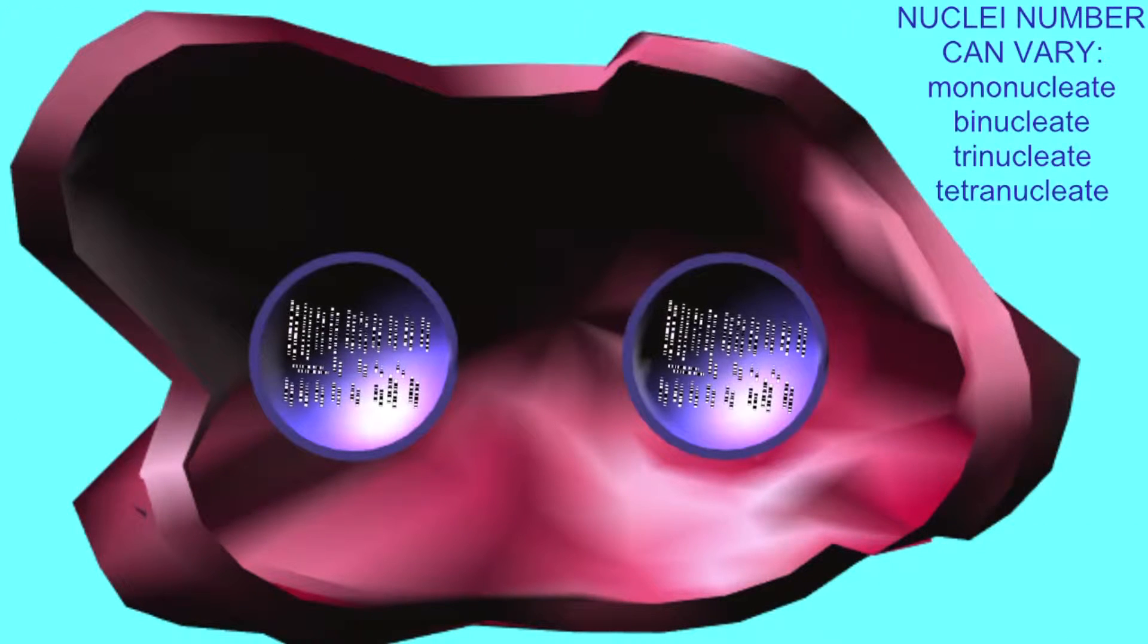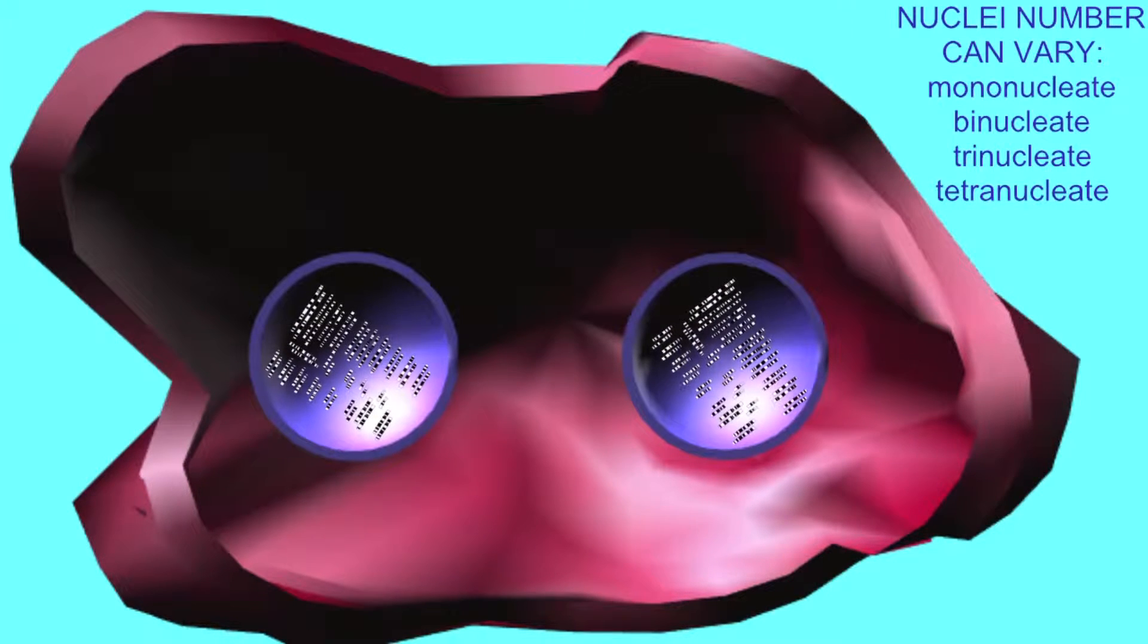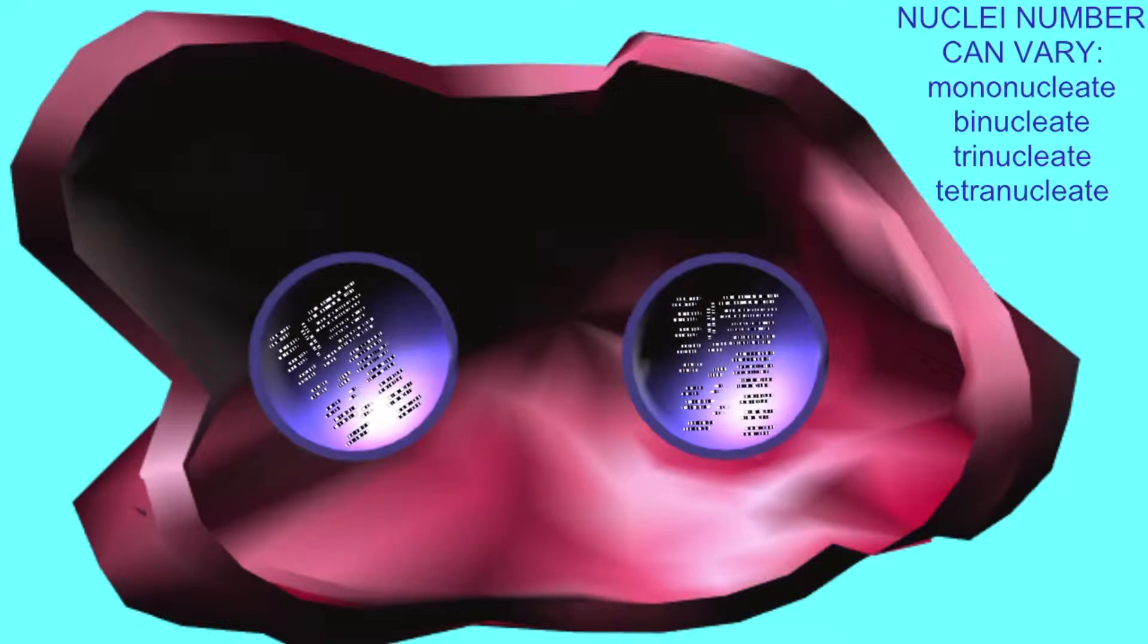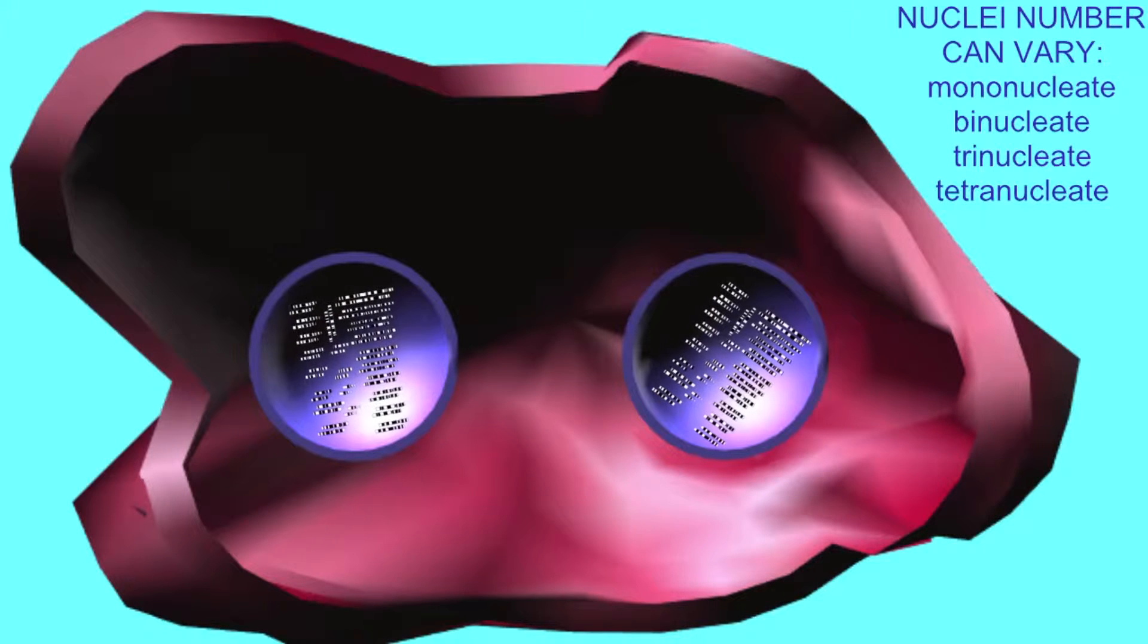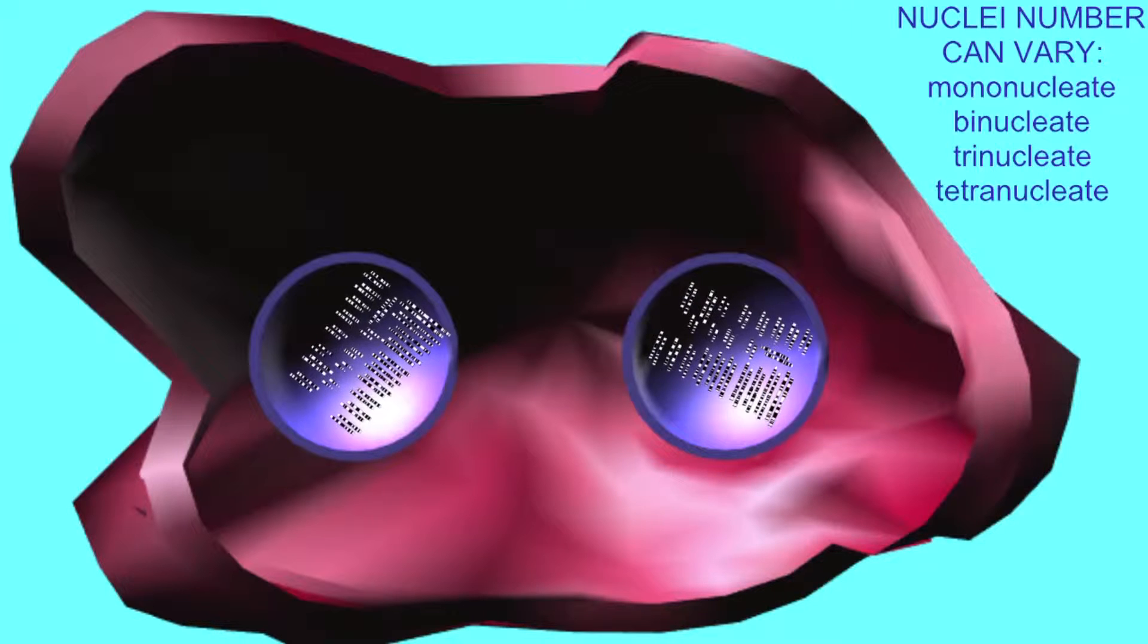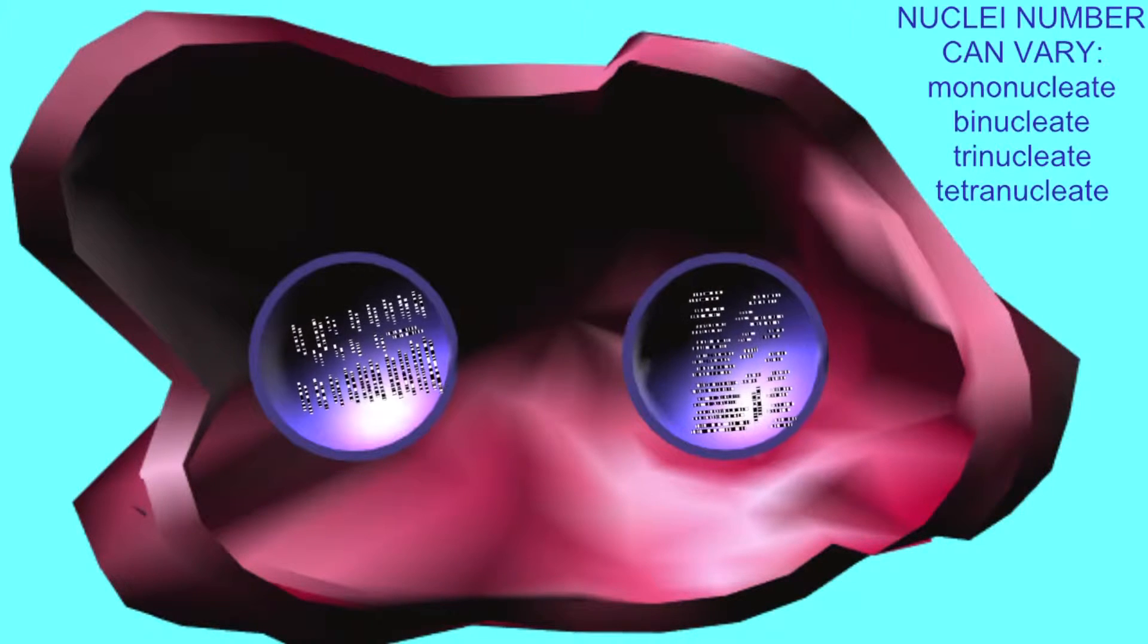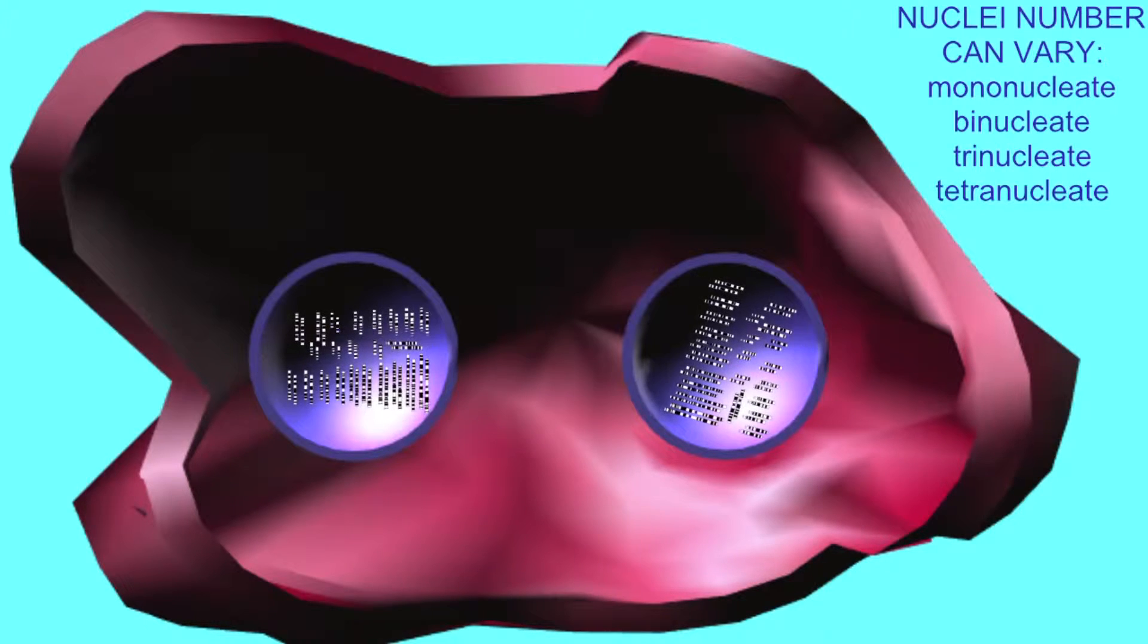Many hepatocytes possess a single nucleus. Many others are binucleate with two separate nuclei. And small subsets of hepatocytes may be trinucleate or tetranucleate. A nucleus may possess one or more diploid counts of chromosomes.